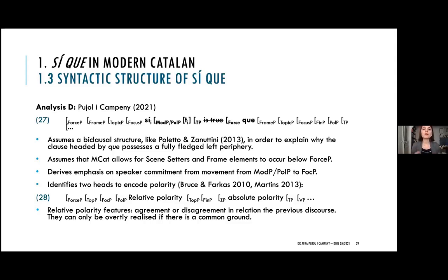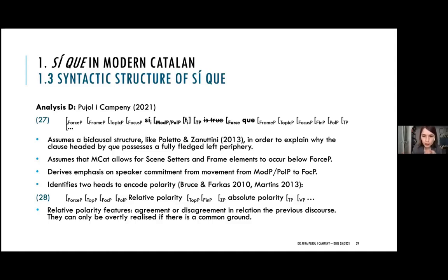The polarity head I'm assuming exists in the left periphery would host relative polarity features, which are different from absolute polarity features, as shown in example 28. Relative polarity features express agreement or disagreement in relation to the previous discourse and the common ground, as described by Farkas and Bruce 2010. Absolute polarity features basically encode whether a predicate is positive or negative — the projection in which we find 'no' in Romance or nothing in an affirmative sentence — as explored at length in Martins 2013.